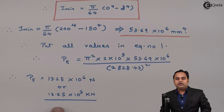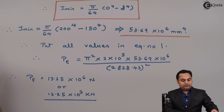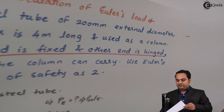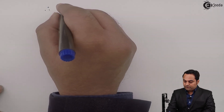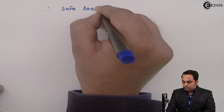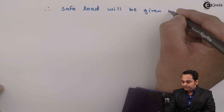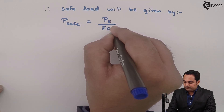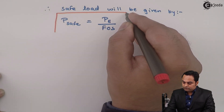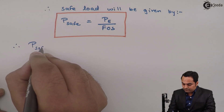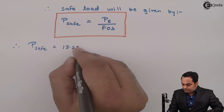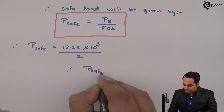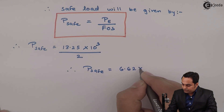If the factor of safety were not given, 13.25×10³ kN would be our final answer. However, since the factor of safety is given as 2, we calculate the safe load: P_safe = Euler's load / Factor of safety = 13.25×10³ / 2 = 6.62×10³ kN. This is our final answer.